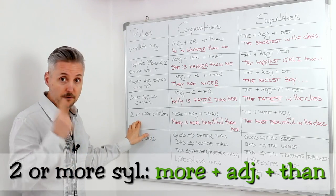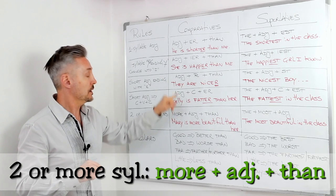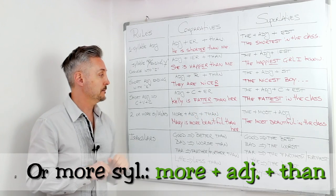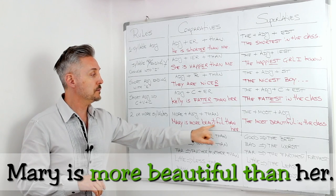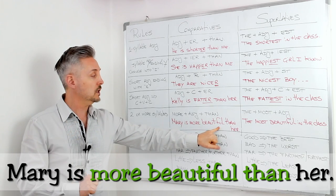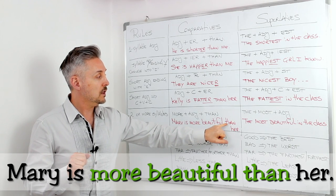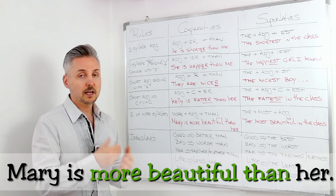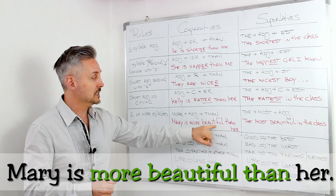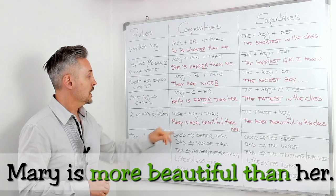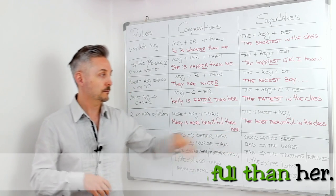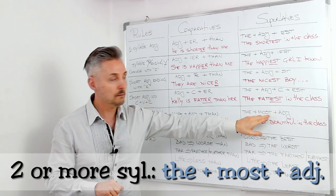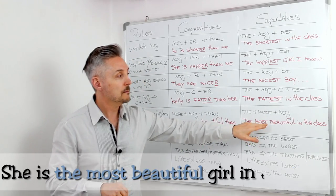So, two or more syllables here. We add more for comparative adjectives. So, more plus adjective plus than. For example, Mary is more beautiful. So, this is two-syllable adjective. So, more beautiful than her. How do I know if it's two or one? You look up the word in your dictionary. So, in this case, beautiful. Two-syllable. So, she is more beautiful than her, than another girl. The superlatives, the plus most plus adjective. The most beautiful in the class.